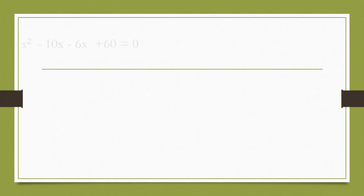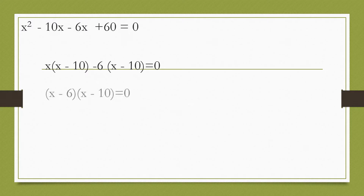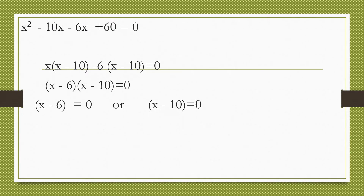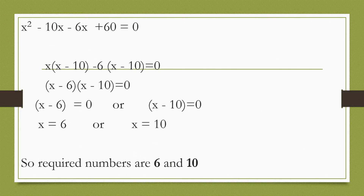The equation becomes x square minus 10x minus 6x plus 60 equals 0, which implies x into x minus 10 minus 6 into x minus 10 equals 0, or x minus 6 into x minus 10 equals 0. So x equals 6 or x equals 10. Therefore the required numbers are 6 and 10.